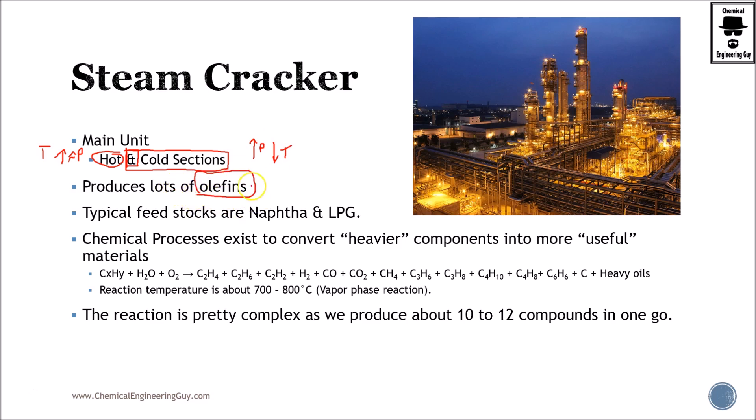The cold stage must be high pressure, low in temperature. The main idea is to produce lots of olefins—olefins must have double bonds. The typical feedstock is naphtha and liquefied petroleum gas, or even natural gas. Chemical processes exist to convert the heavier components into more useful materials. You have CXHY with water and oxygen, and what you want to do is to maximize ethylene, ethane, acetylene. Hydrogen gas is a byproduct.